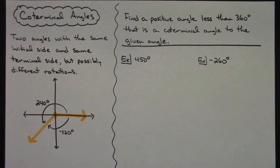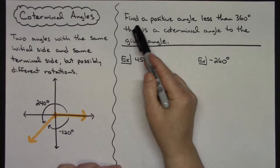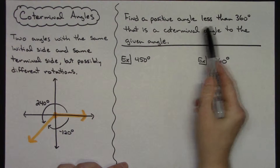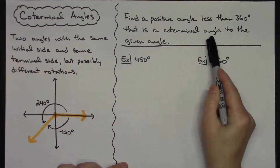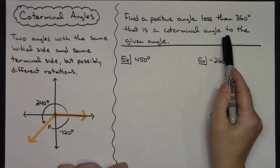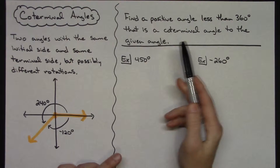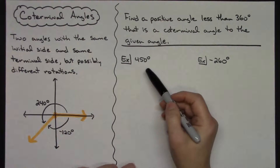In a scenario where they might ask you about co-terminal angles, they might tell you to find a positive angle less than 360 degrees that is co-terminal to the given angle. This is sometimes a useful skill.